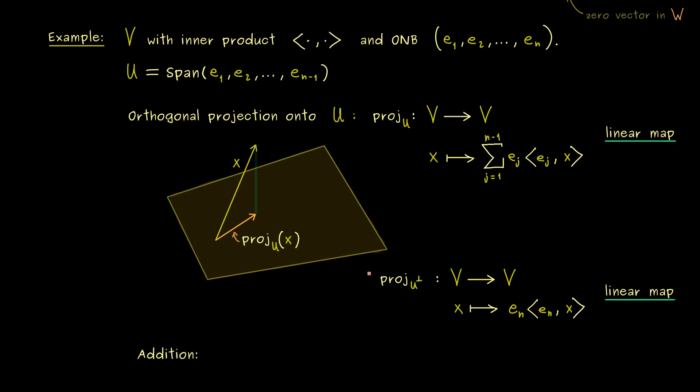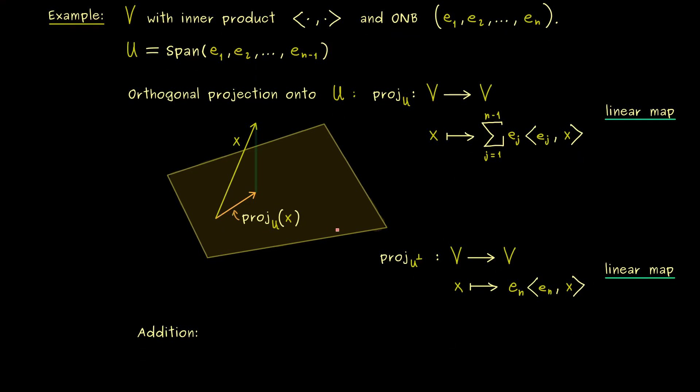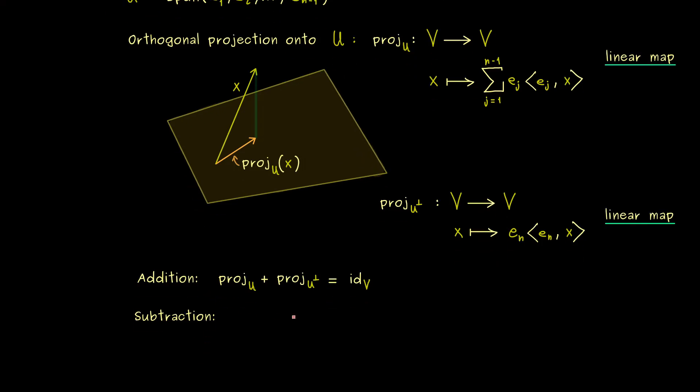And now what we could easily do is to add both linear maps here. And now not so surprising, if we use the addition here, what we get out is the identity map on V. You see that immediately: both projections added gives us the vector x back. Moreover, we could also do another combination here, namely we could subtract both projections. And please never forget, subtraction just means that we multiply the one vector with the scalar minus 1, and then we use the vector addition again.